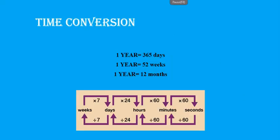Here are some important time conversions. One year is 365 days. One year also has 52 weeks. One year we all know is 12 months. One week has seven days, one day has 24 hours, each hour has 60 minutes, and each minute has 60 seconds. Remember: if you are converting forward, you multiply; if you're converting backwards, you divide.